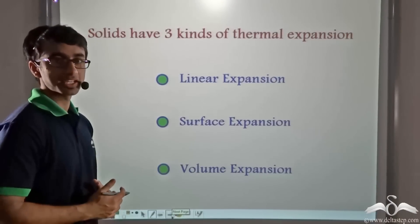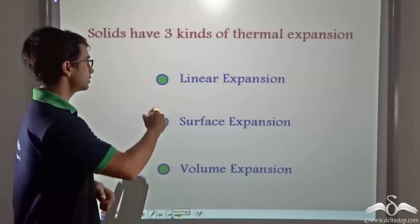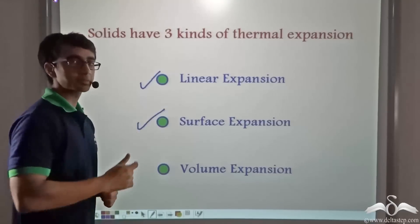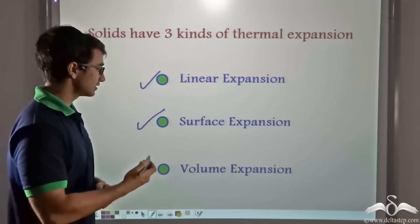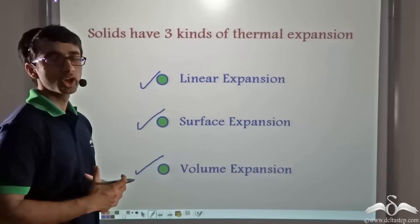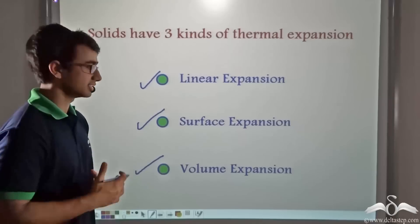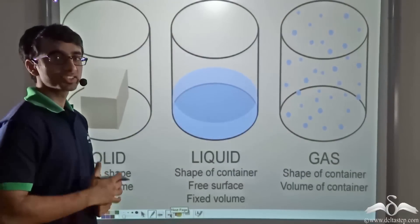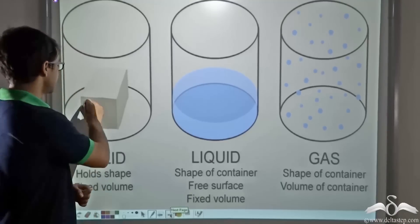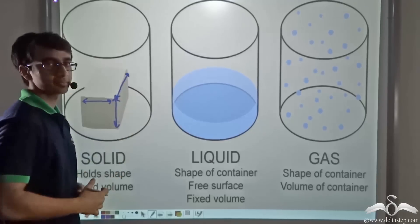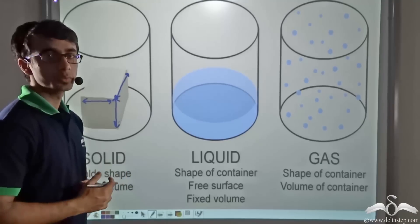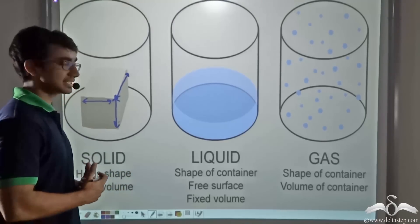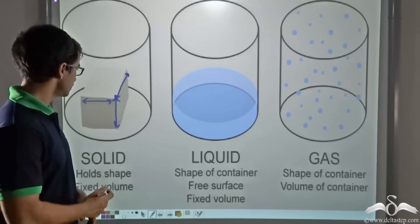So there are three kinds of expansions which solids undergo. The first is linear expansion, when considering a long and thin wire. The second is surface expansion, when considering a very thin plate or sheet. The third is volume expansion, when a cube or any body with a fixed length, breadth, and thickness is considered. In case of solids — since they have a definite shape — we can consider linear expansion for a thin wire, surface expansion for a thin sheet, or volumetric expansion for a body with definite dimensions.